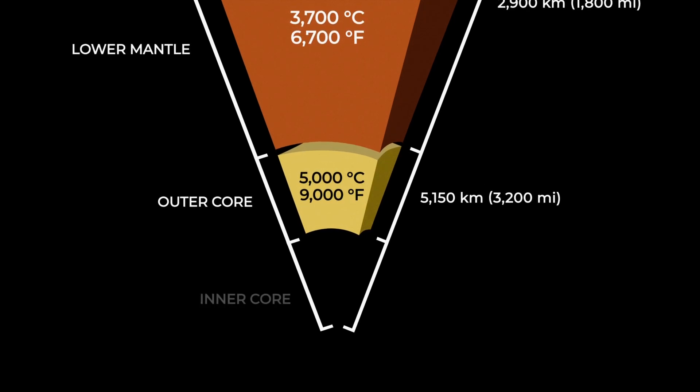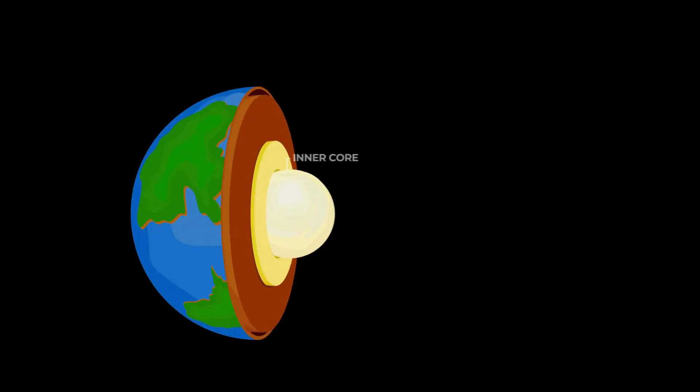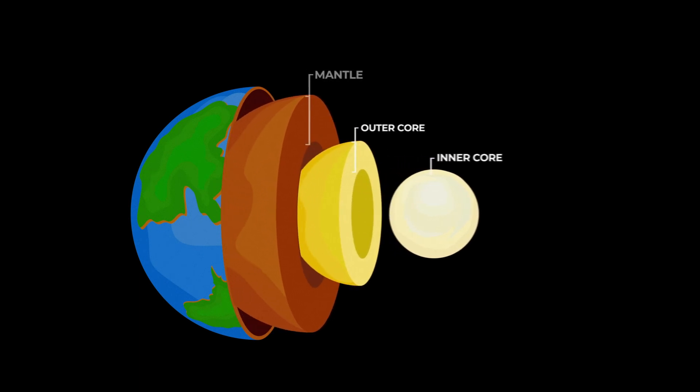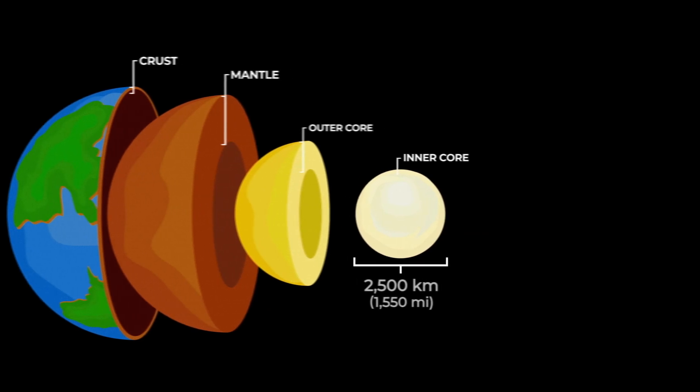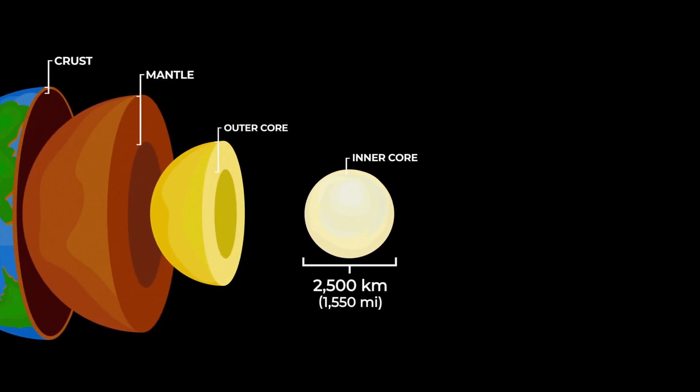Finally, the inner core is a solid metal ball, mostly made of nickel and iron, that is about 2500 kilometers or 1550 miles wide. It can reach 6000 degrees Celsius or 11000 degrees Fahrenheit.